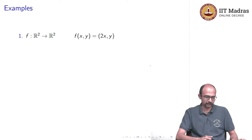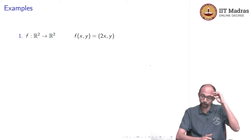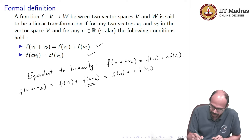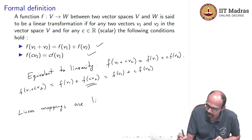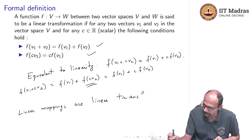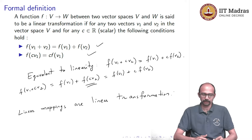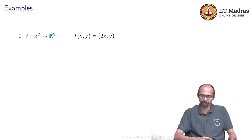Let us look at some examples — these are all examples of linear mappings and hence linear transformations. First, f(x, y) = (2x, y); second, f(x, y) = (2x, 0); third, f(x, y, z) from R^3 to R^3 is (x/2, 3y, 5z); fourth, f from R^3 to R^4 is (4y − z, 3y + (11/19)z, 5x − 2z, 23y); and fifth, f from R to R^3 is f(t) = (t, 3t, (23/89)t).